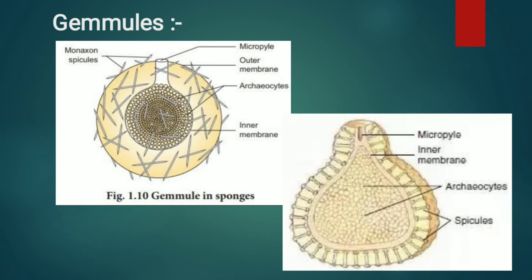A full-grown gemmule is usually pierced by an opening on one side called the micropyle. In the picture, a rod-like structure called the micropyle is visible at the uppermost position. The internal mass of archaeocytes is filled with reserved food material formed by trophocyte cells. During favorable conditions, the archaeocytes escape through the micropyle and develop into new sponges.